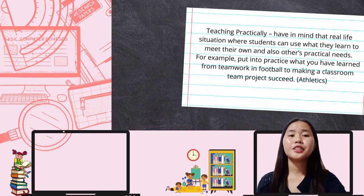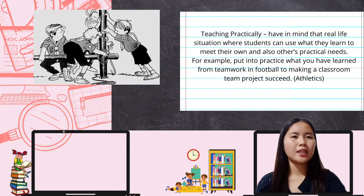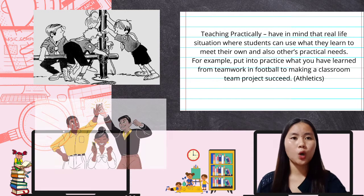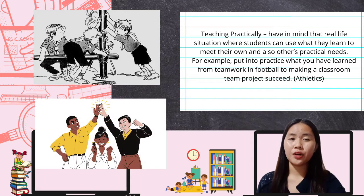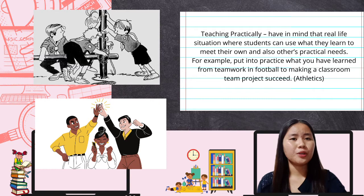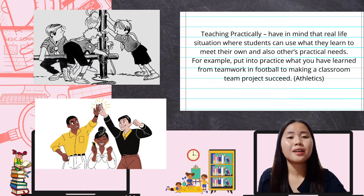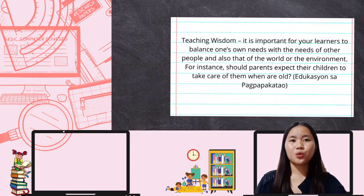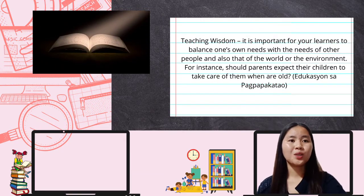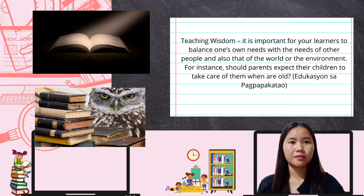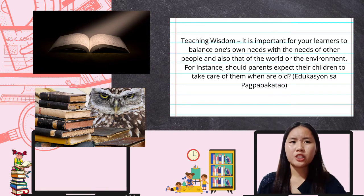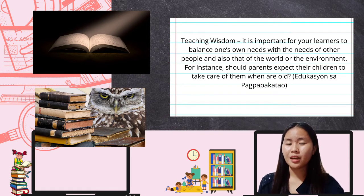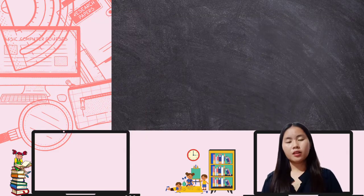Number three, when teaching practically, keep in mind real-life situations where students can use what they learn to meet their own and others' practical needs. For example, in athletics, put into practice what you have learned from teamwork in football to make a classroom team project succeed. Lastly, when teaching for wisdom, it is important for learners to balance their own needs with the needs of other people and the environment. For instance, in education: should parents expect their children to take care of them when they are old?